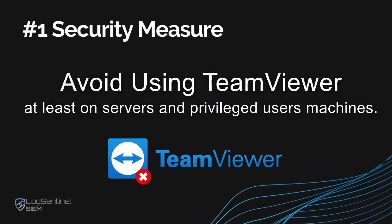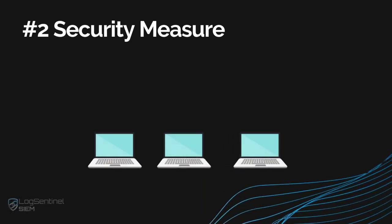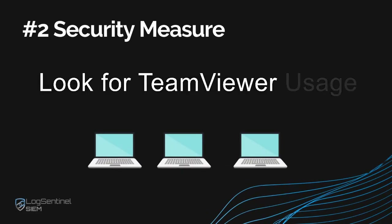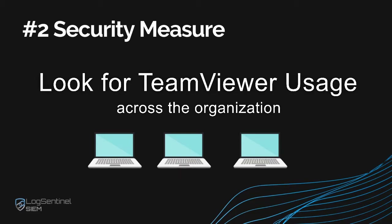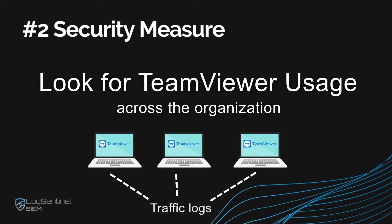Instead, use a VPN and then SSH or RDP to the machine you need. The second security measure is to look for TeamViewer usage across the organization. You may have a VPN, but some employees might still ignore general recommendations and run TeamViewer. You can detect TeamViewer usage by collecting traffic logs, which can typically be achieved through a properly configured SIEM. Once you find the offenders, there are different approaches to prevent breaches.